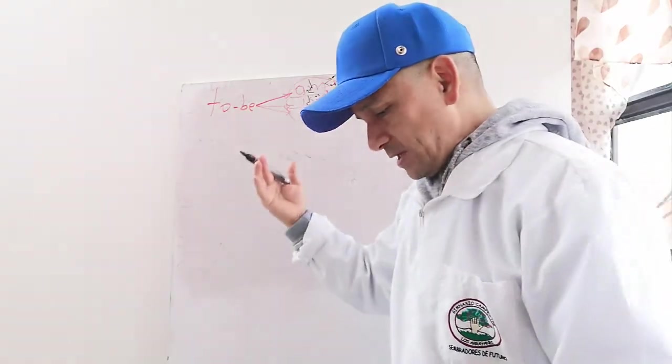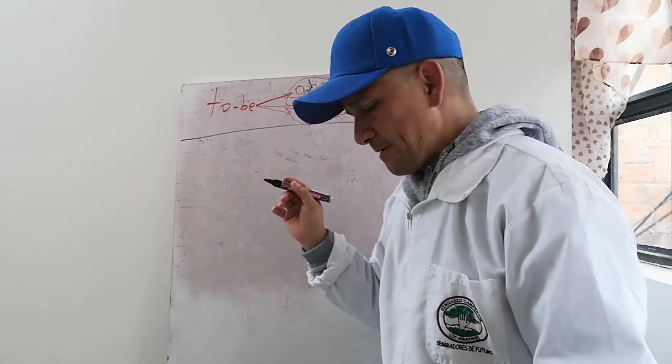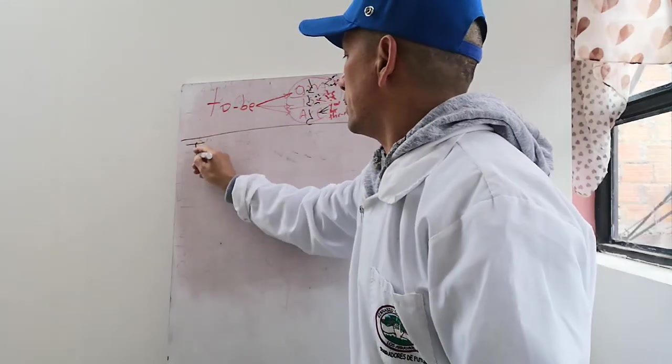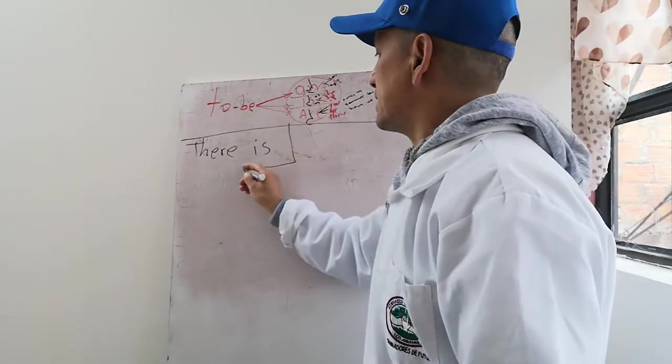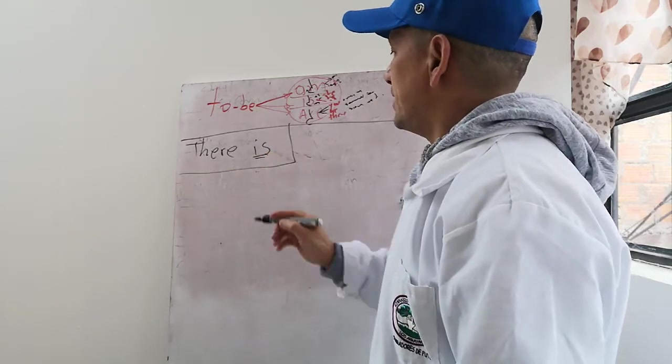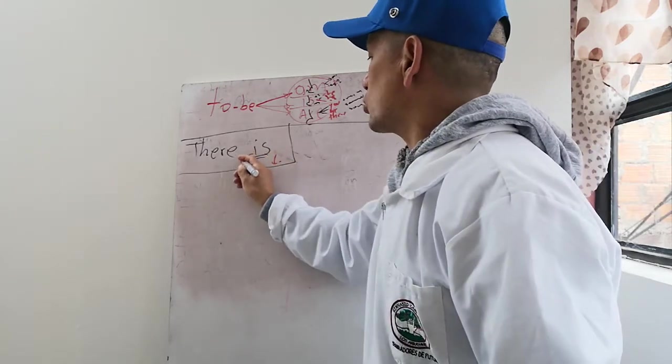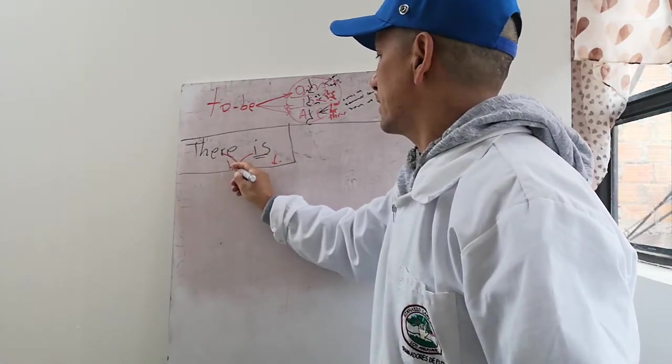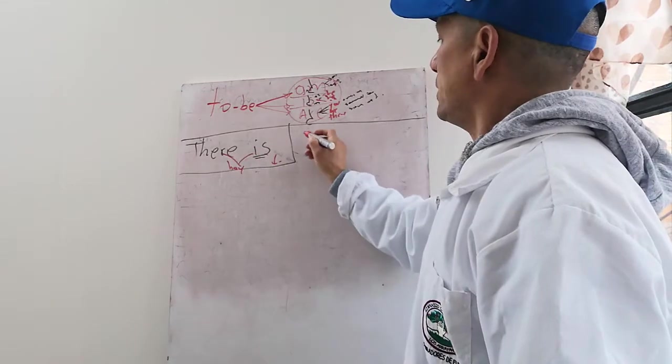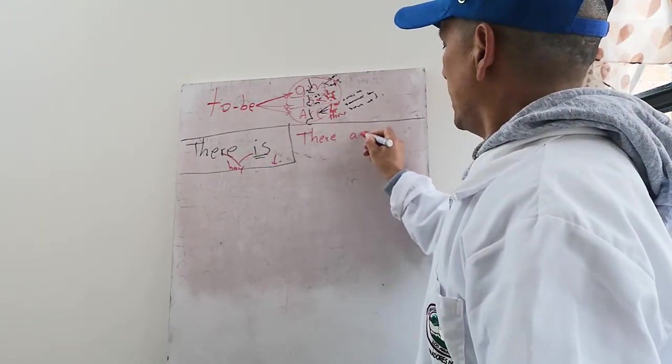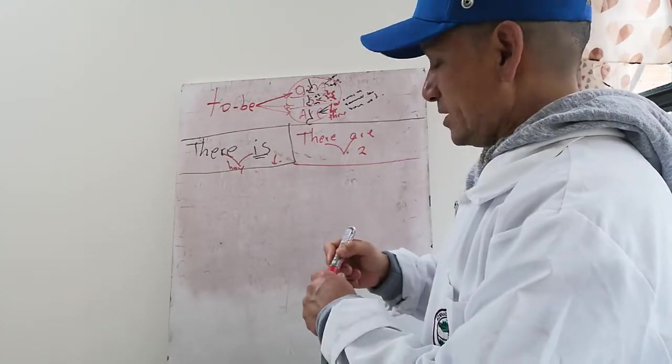Luego vimos el verbo to be, vimos la palabra there y la palabra is. Tienen que recordar que la palabra is que viene del verbo to be siempre va a indicar singular y que para nosotros estas dos palabras significan hay. Entonces there is es hay, y la palabra there are es hay pero plural, de más de dos cosas.